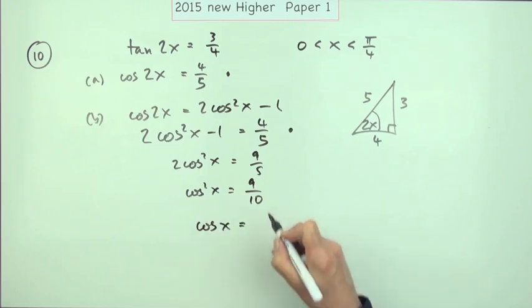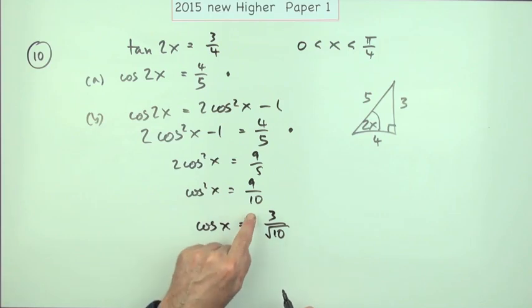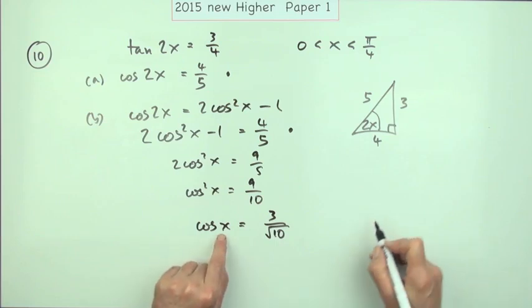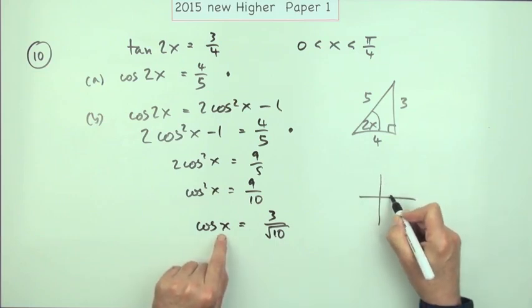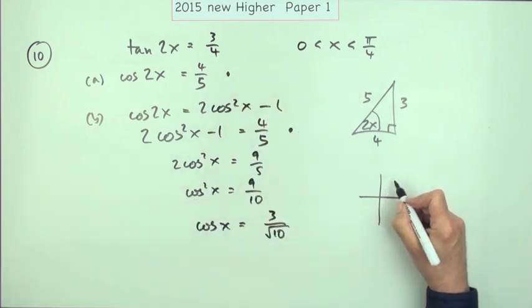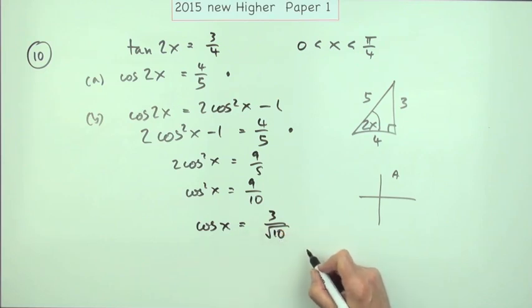Now the final part would just be take the square root. The square root of that is 3, the square of the denominator is root 10. Now a square root can be positive or negative.